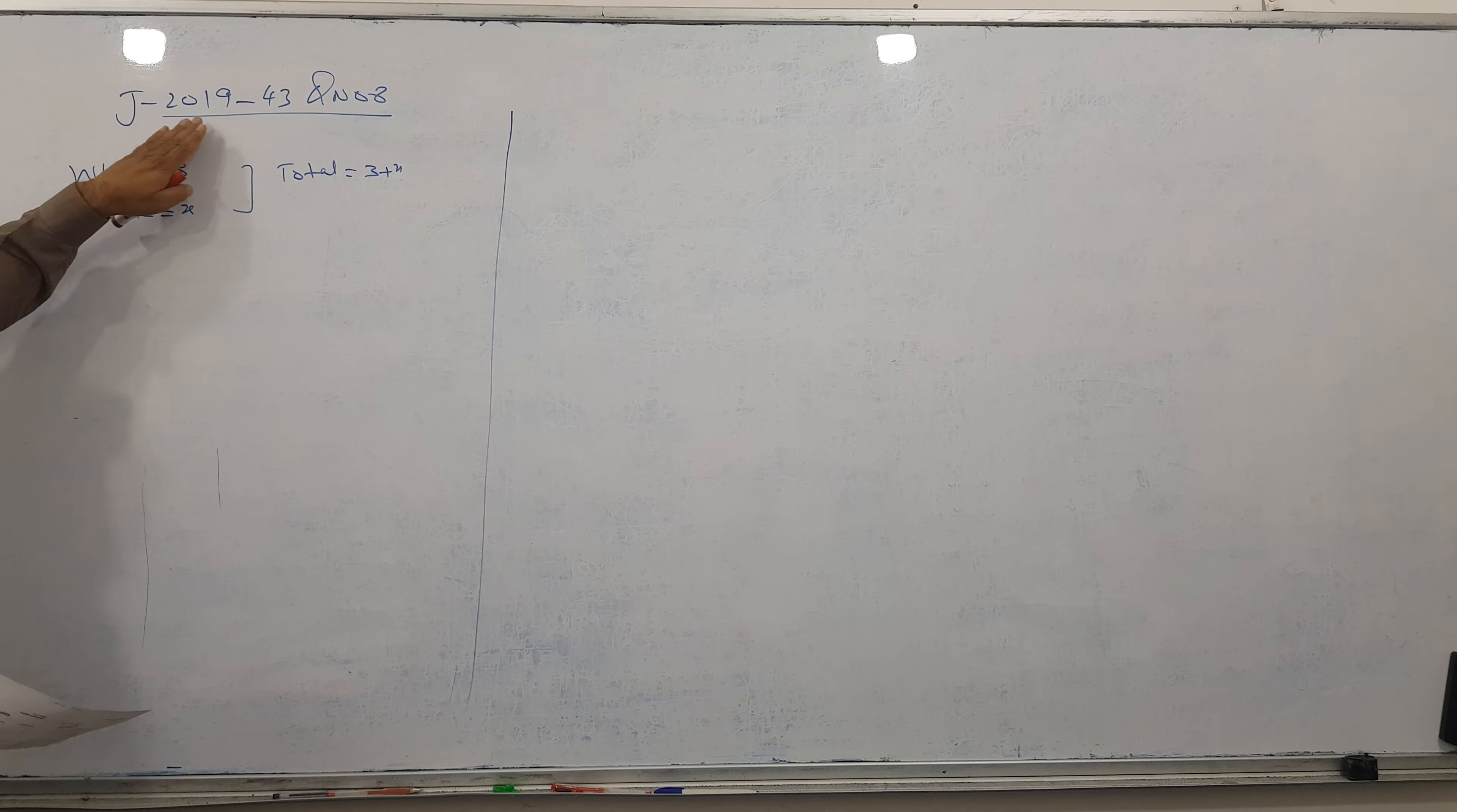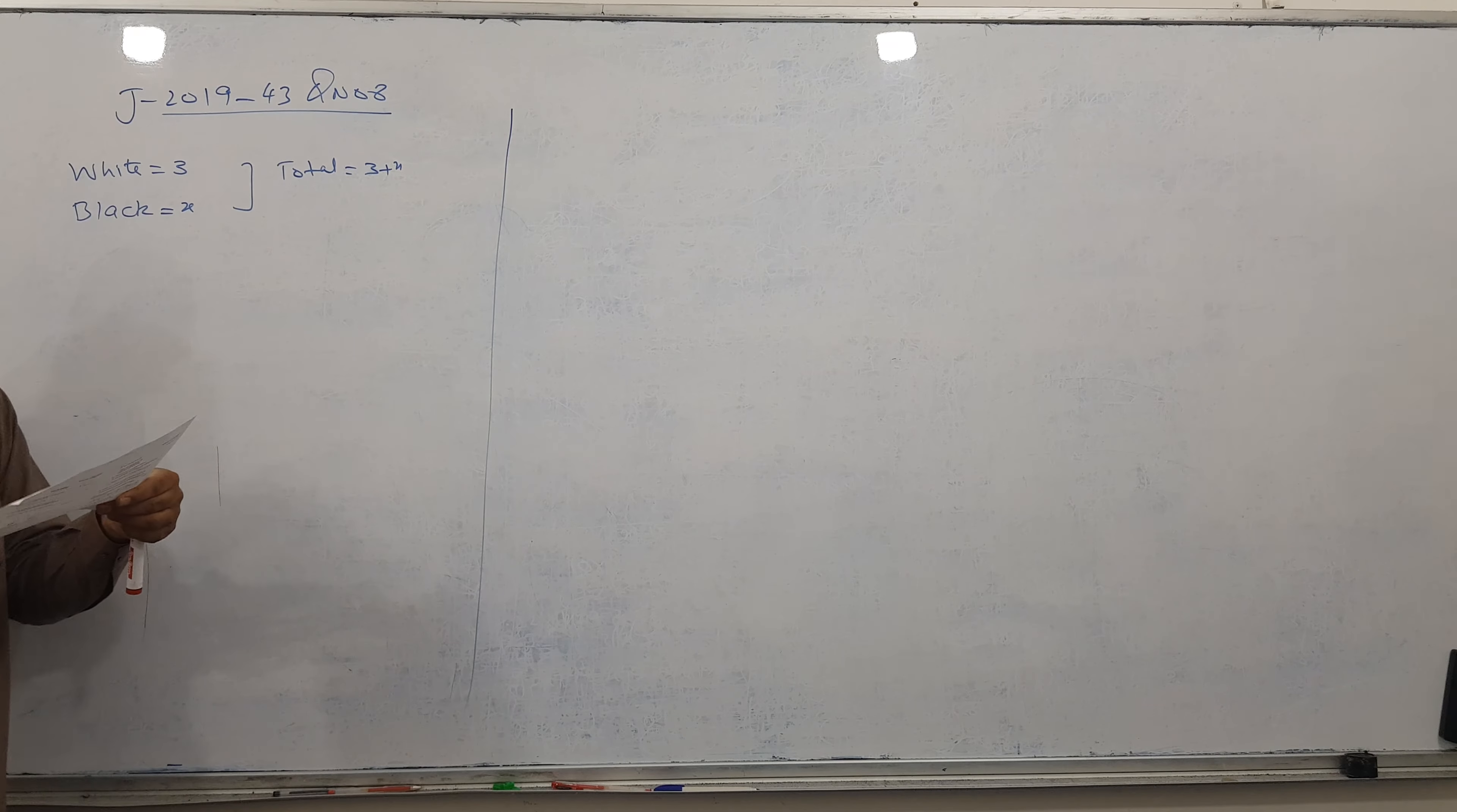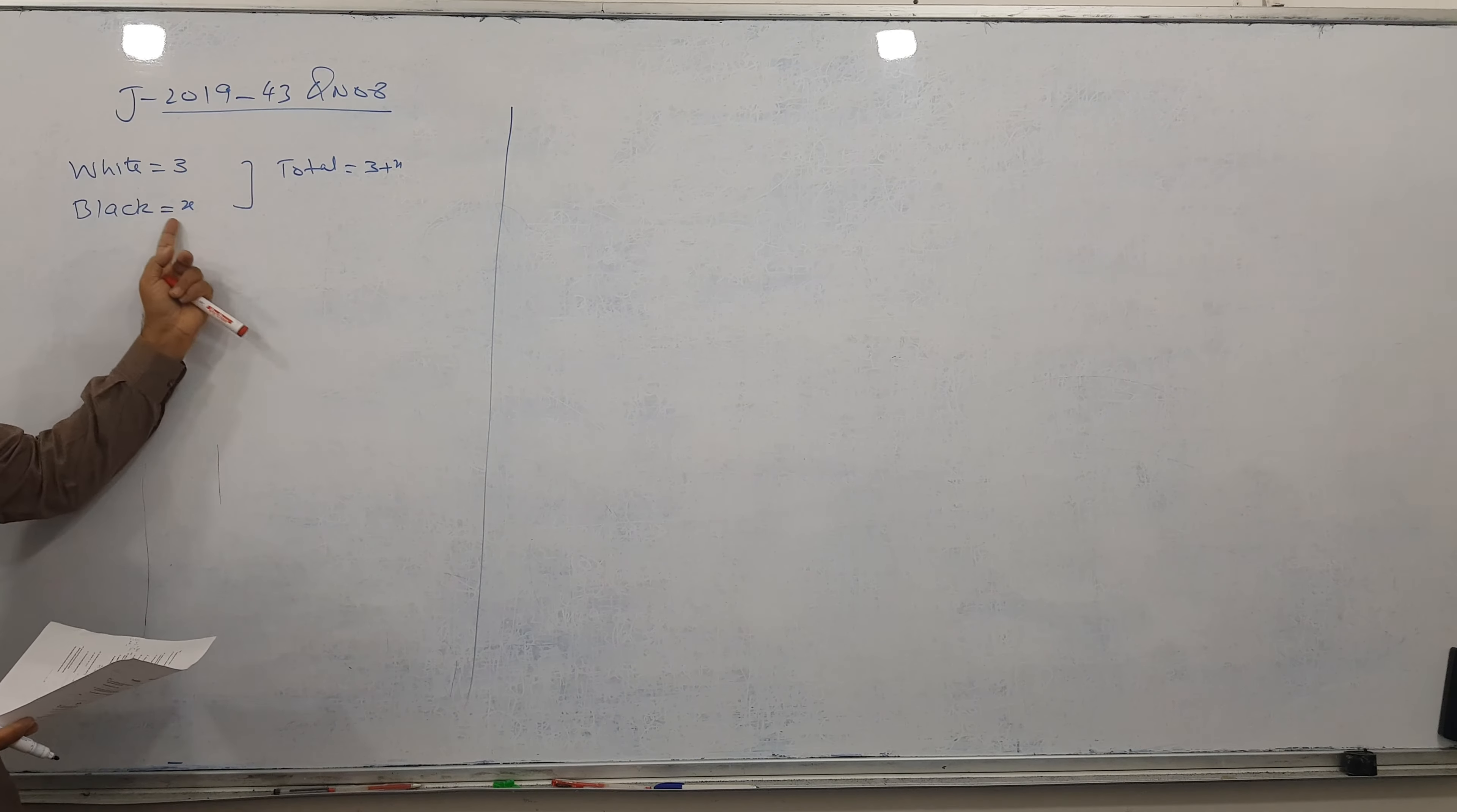Bismillahirrahmanirrahim. Question June 2019, variant 43, question number 8. The topic is probability. We are given in the question that a bag contains 3 white and X black counters, so the total is 3 plus X.